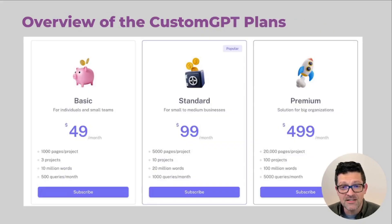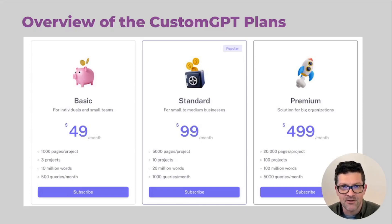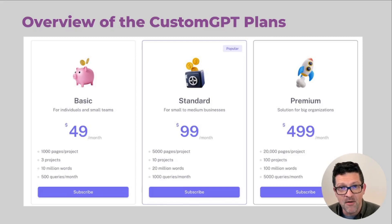Now the plans here for Custom GPT — moving into the software review section of the video — the basic plan is $49 a month, which gives you enough to really test it, kick the tires, and see what use cases and what value it can bring. There is no free tier, but I will have a link in the description of this video for a free month that you can try it out.